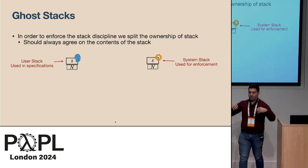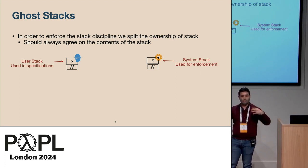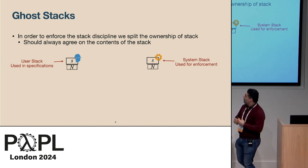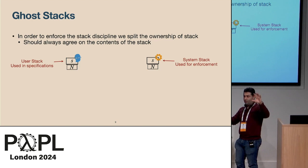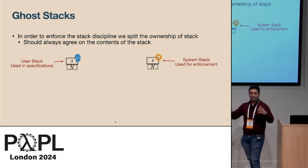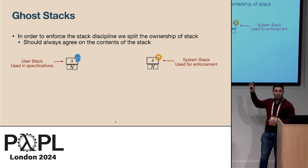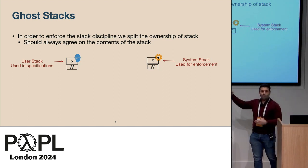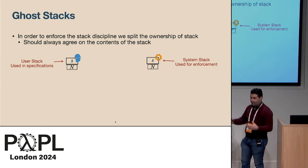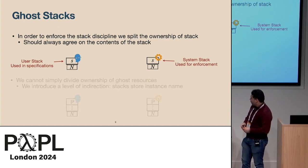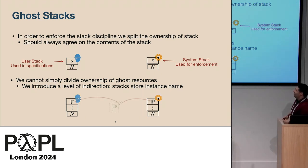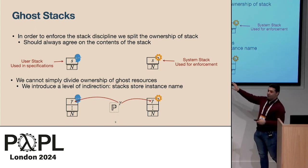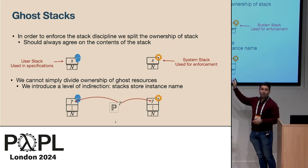For technical reasons, to enforce this stack discipline throughout the program, we want to split this stack — giving half to the user for the specification, and the other half to the program logic to enforce that the stack discipline is adhered to. Since we cannot simply duplicate resources in separation logic, we introduce a level of indirection: ownership is stored separately, and on the stack we just store the names of the ghost resources.